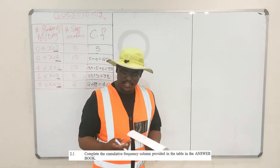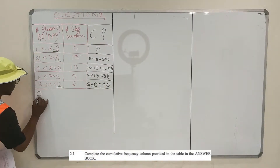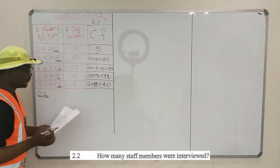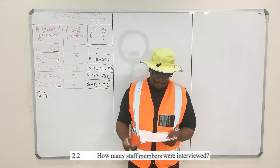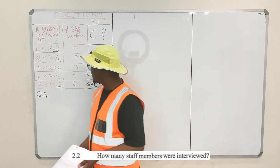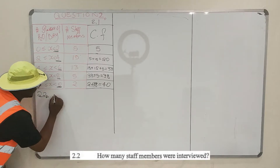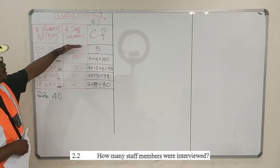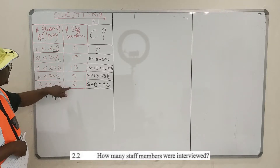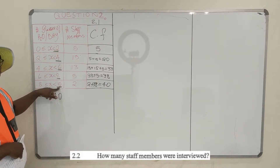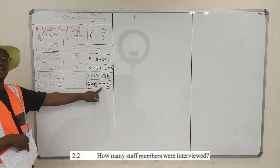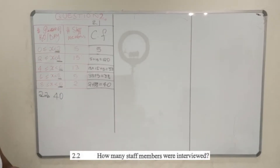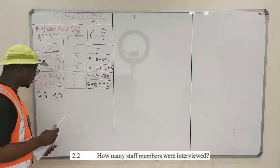So let's move to question 2.2: how many staff members were interviewed? As I just said, there were 40 staff members that were interviewed. Because all of these people drank less than 10 glasses of water, and your running total — the cumulative frequency — for less than 10 is all of them. So there were 40 staff members present on that day.